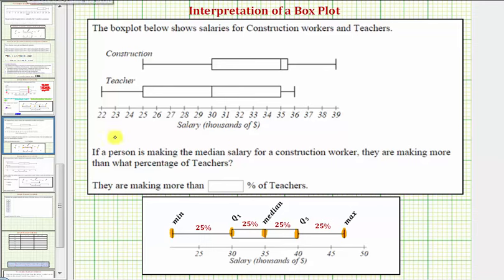So looking at our question here, if a person is making the median salary for a construction worker, which would be here, they are making more than what percent of teachers? So the median salary for a construction worker again is here, which is thirty-five thousand dollars per year.